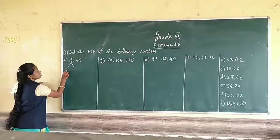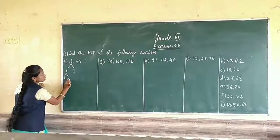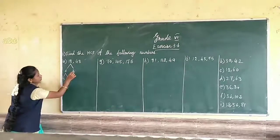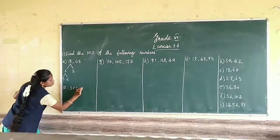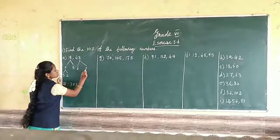This one we can write as 16 and 18. 3 into 2, 6. 18 we have 3 into 3 into 2. 48, 6 into 8 is 48.